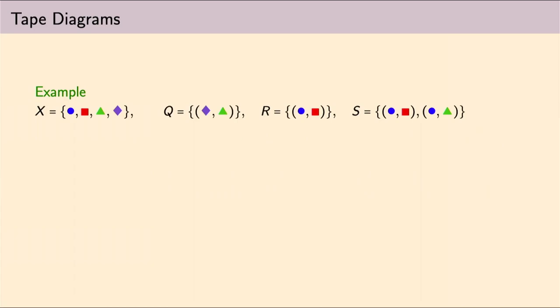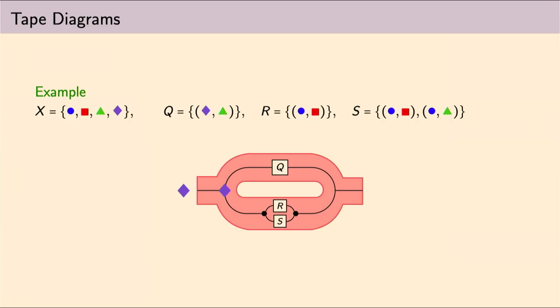Okay, again, I will show you an example of how these things work. Now, we are also considering a relation Q between the diamond and the triangle. So, this is a tape diagram having a single relation Q in its top tape. And on the bottom, we have the string diagram we saw before, the one representing the intersection between R and S. Imagine we have a diamond here on the left. Then, this diamond doesn't get duplicated, but actually, it follows a branching behavior. It goes, for example, on top.